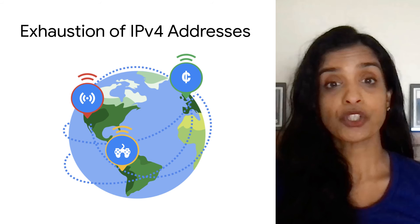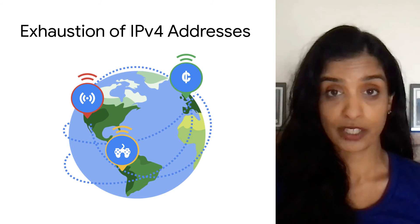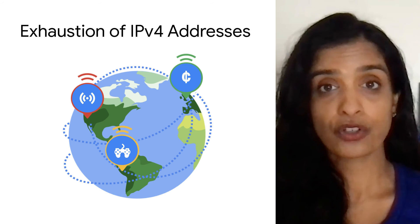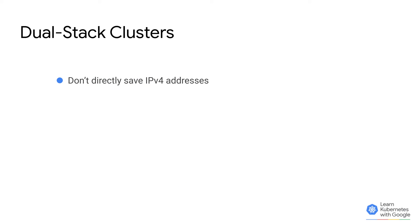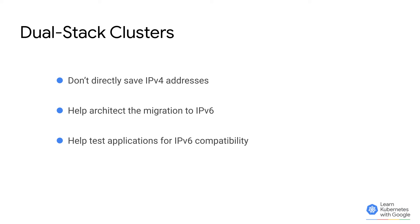With dual stack networking in Kubernetes, we're now able to ensure IPv6 communication is working as intended. This helps users migrate to IPv6. While dual stack clusters don't save on IPv4 addresses directly, they do help users architect differently in the migration to IPv6. They also help users to test applications for IPv6 compatibility before adoption. Finally, dual stack clusters allow workloads to reach IPv6 endpoints on the internet.